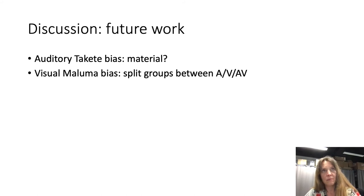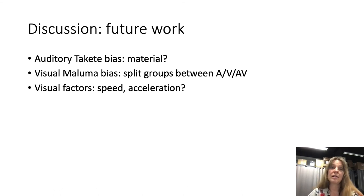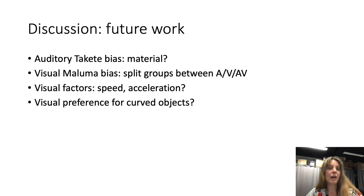In consequence, merely absence of the takete bias in the auditory channel, maybe the visual channel was judged more towards maluma. To find out, we would like to split the groups into an audiovisual group, a visual-only group, and an auditory-only group, in the hope of finding enough participants for such experiment. One factor that was not controlled or varied in the experiment was speed and acceleration of the ball, which might be something that is perceived pretty well from the visual channel in turn. And one more thing to consider is the known visual preference for curved objects that us humans tend to have.